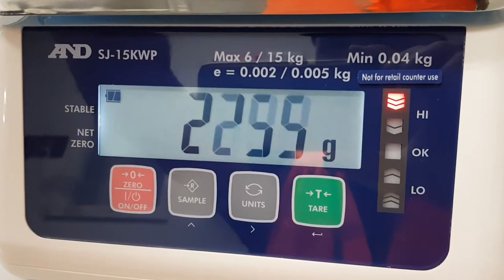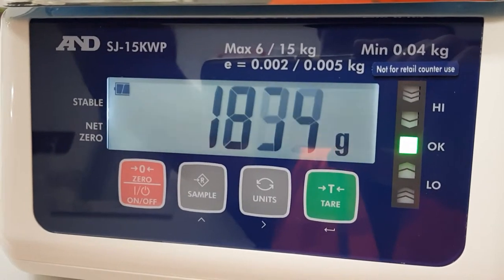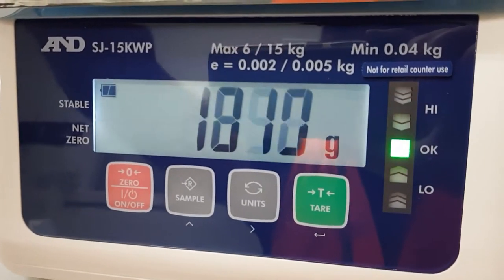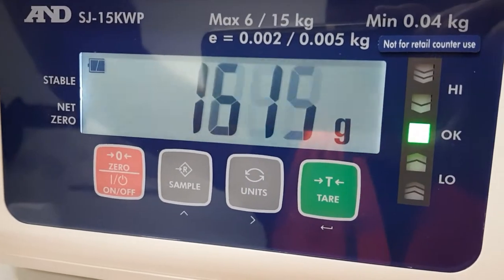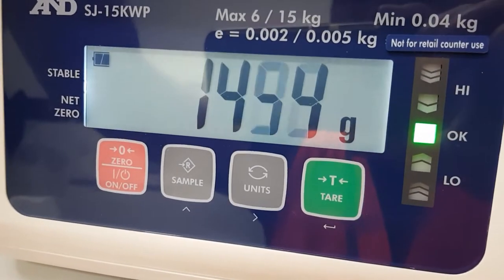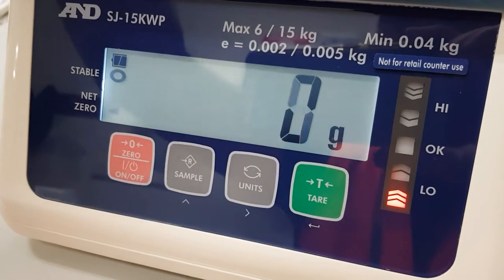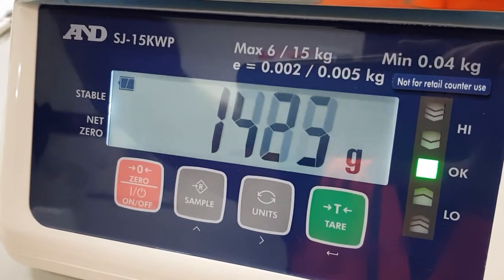The key here is you want people packing manually to be not just over the minimum weight, but you don't want them to give away too much product. So you want them to be under your upper tolerance. That way you can manage your giveaway when you're packing manually.